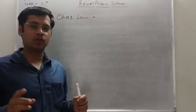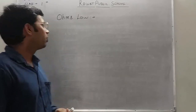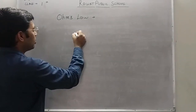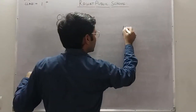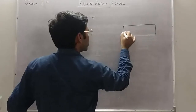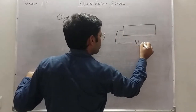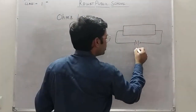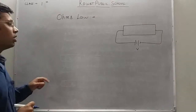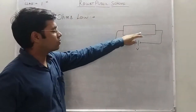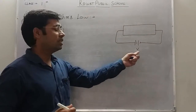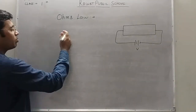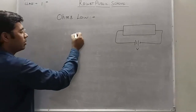Ohm's Law gives us a relationship between electric current and potential. The definition of Ohm's Law is quite easy and we studied this in 10th class as well. It says that if we have a conductor connected to a battery, the current flowing through this conductor is directly proportional to the applied potential difference.